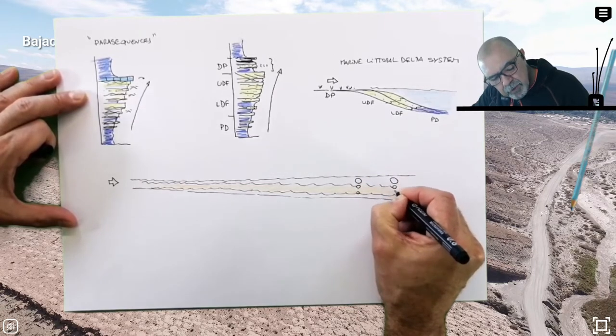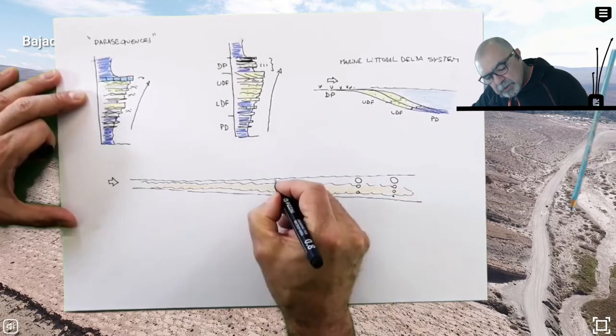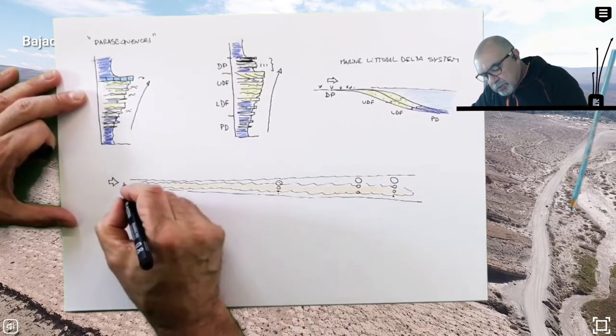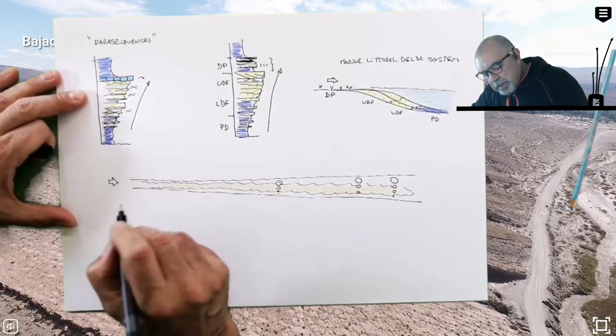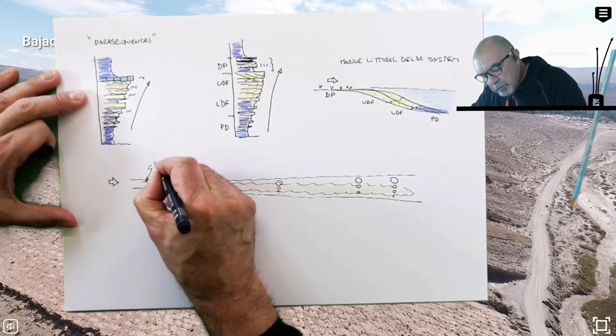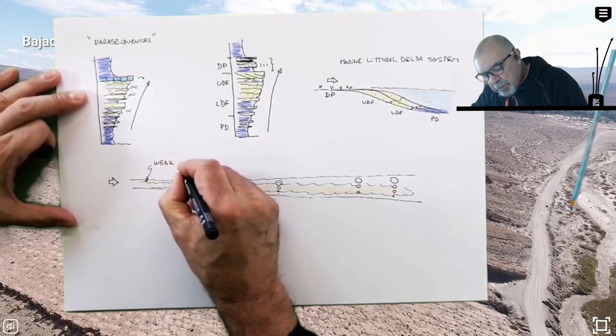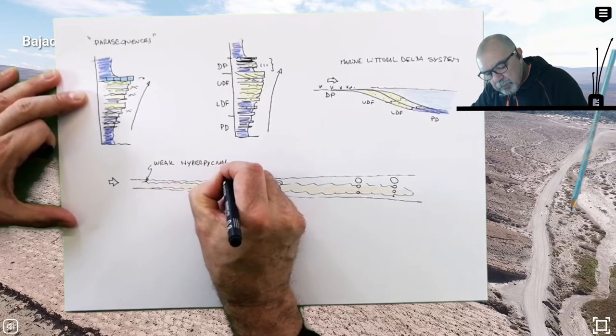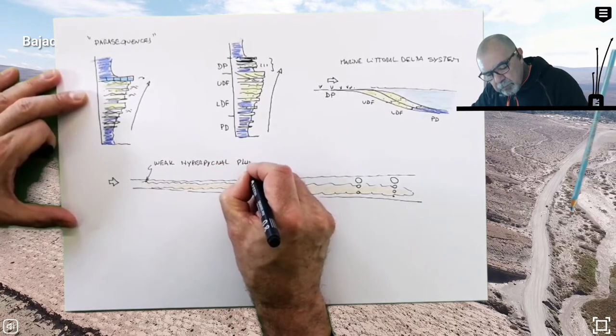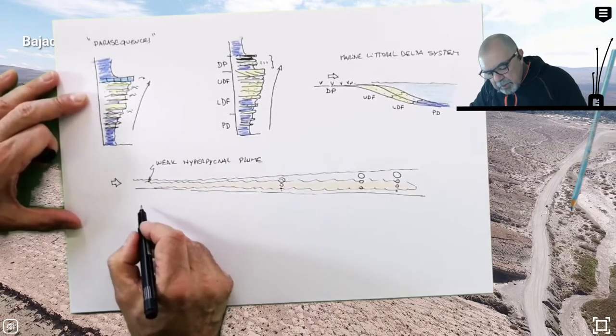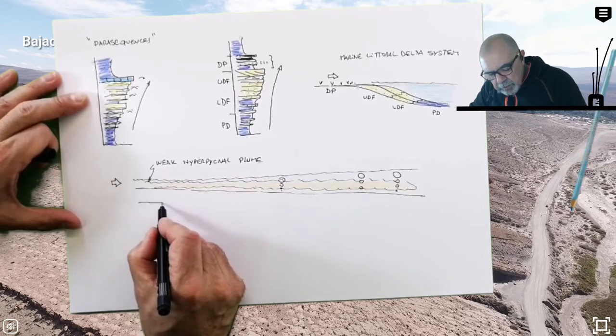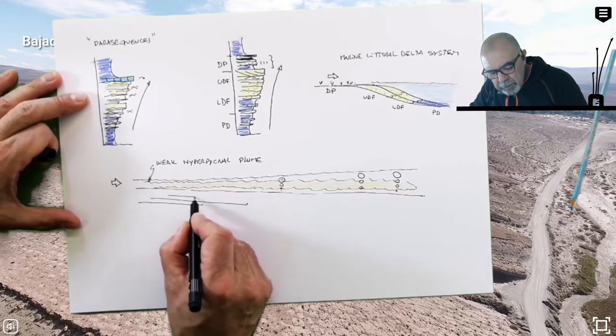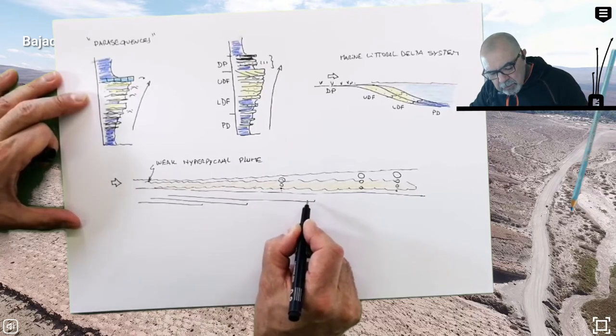So wave action helps this flow in traveling basin-ward very far from the source area. So basically this is a weak hyperpycnal plume. The deposits...